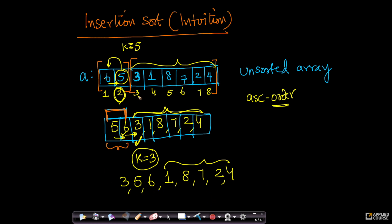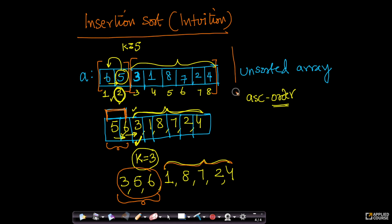Now if you notice, because we have processed the third element, this sub-array till the third element is already sorted. This is in the perfect sorted order: 3 ≤ 5 ≤ 6. While this other sub-array is still not touched. So we have processed the third element, and by the time we process the third element, the first three elements in the array are perfectly sorted.